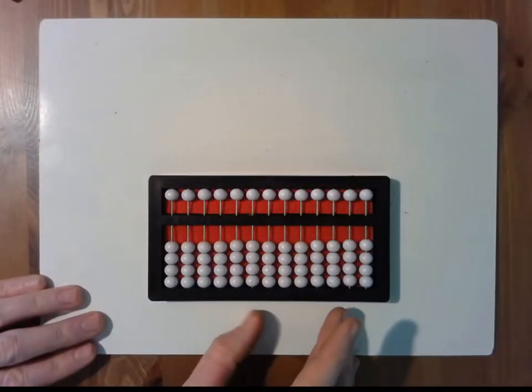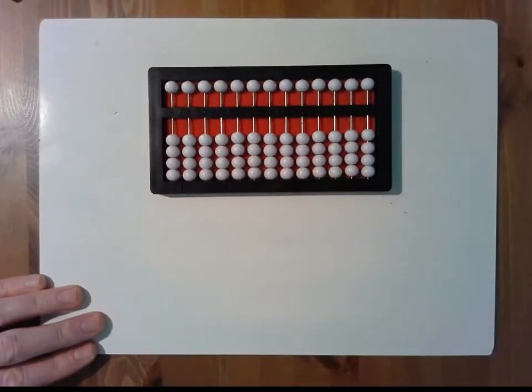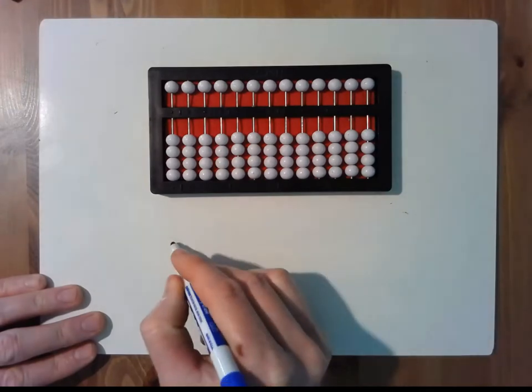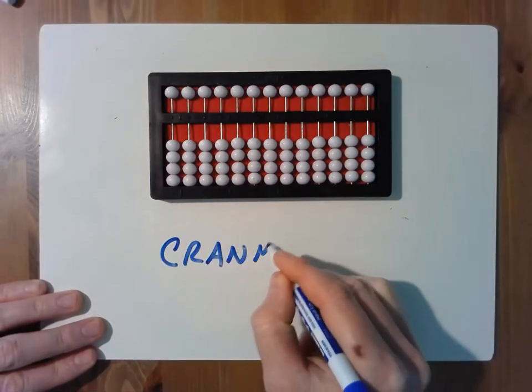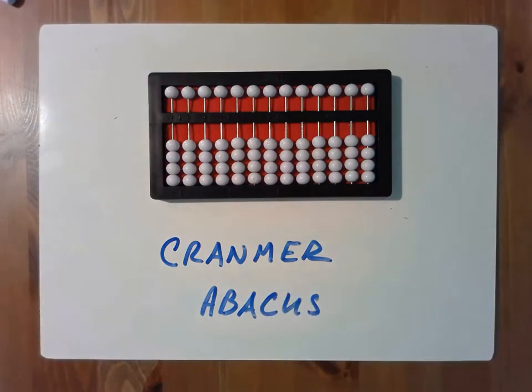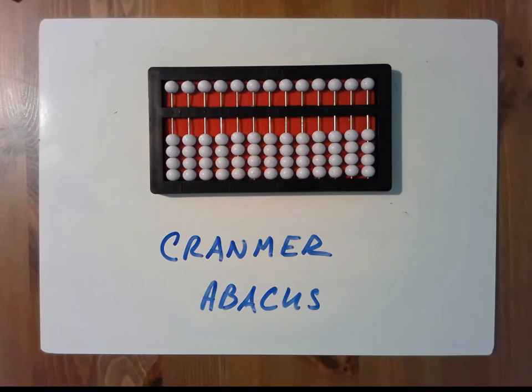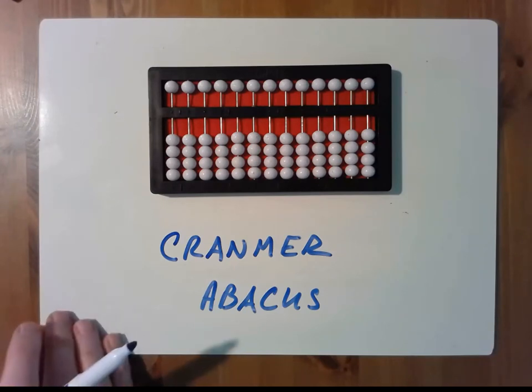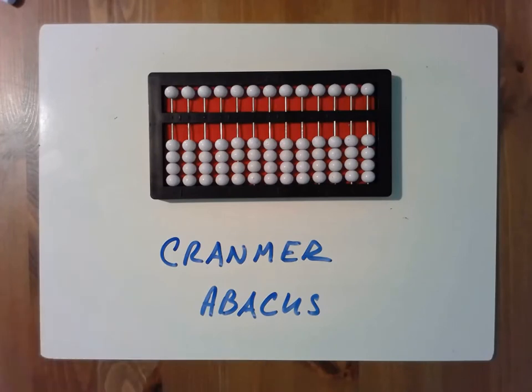For those of you who might not know, the abacus we're working with is called a Cranmer abacus. The foundation or method that I'm using is the counting method. I will post some links in the information section below with more information about this abacus, this method, and in those links you can learn how to add, learn how to subtract, and learn all the parts of the abacus.